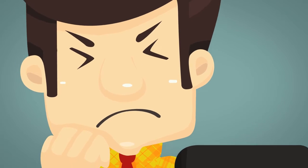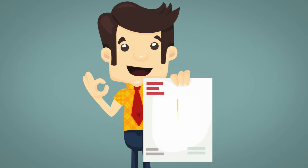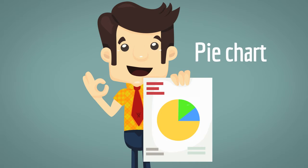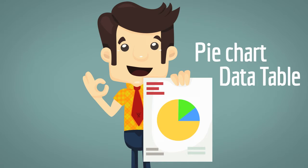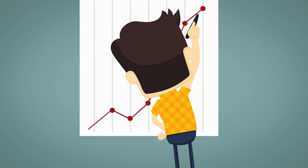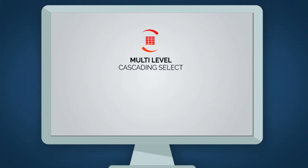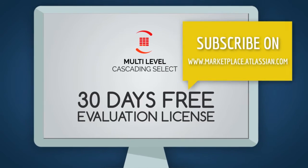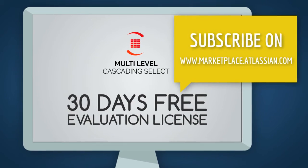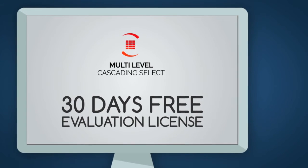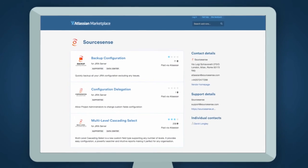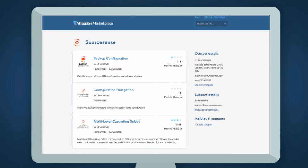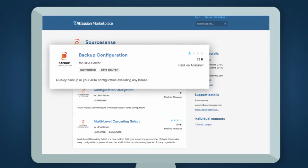Oh seriously, another request? Now he also wants a report! Well, thanks to this SourceSense add-on, I can create a dashboard easily with a pie chart and a data table. Multi-Level Cascading Select supports statistics as well. You too can try it for free for 30 days by activating your license directly on the Atlassian Marketplace. Follow our channel on the Marketplace and discover the other plugins of the SourceSense family.